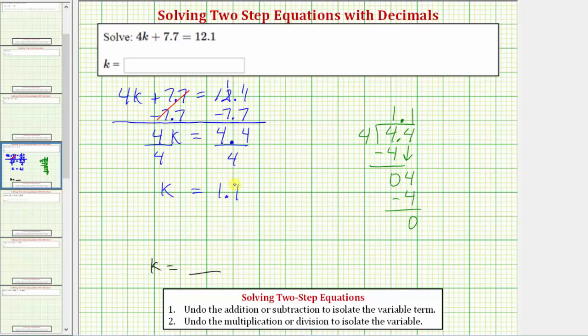So k equals 1.1 is the solution to our equation. Typically, if the equation has decimals in it, we should give the solution in decimal form, which we do have here. So this is one method to solve this equation.